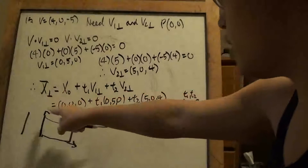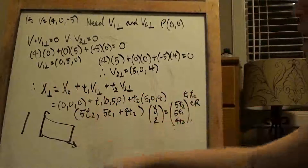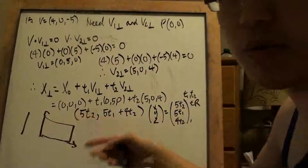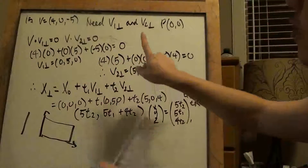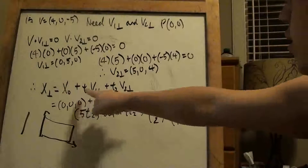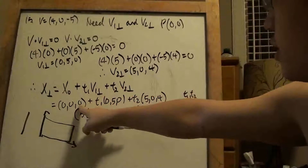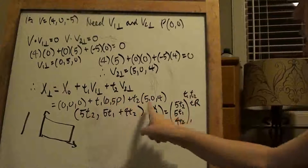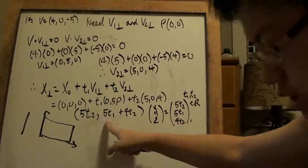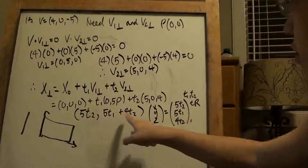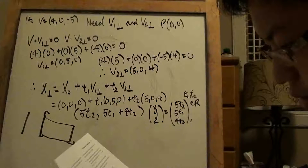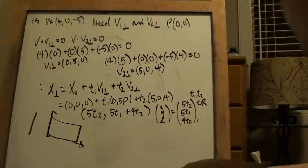Since it's a plane, we use the plane equation — not the line equation. Remember, one vector gives a line, two vectors give a plane. We set up the equation going through the origin, plug it in, and because there are a lot of zeros, a lot of things cancel out. Ultimately I get these results: this will be the vector equation, and this will be the parametric equation because it has parameters.